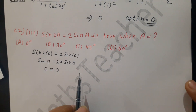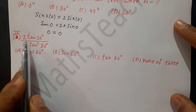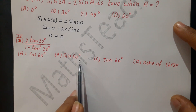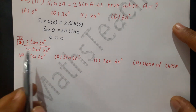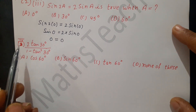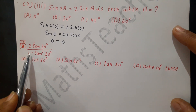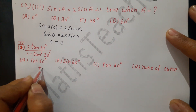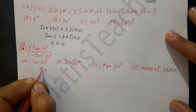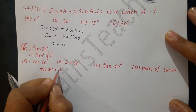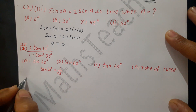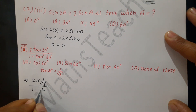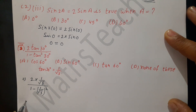The fourth part is: 2tan30° / (1 - tan²30°). The four options are: cos60°, sin60°, tan60°, and none of these. This question is similar to the first part — the difference is the denominator has minus instead of plus. tan30° from the table is 1/√3. We substitute this value.